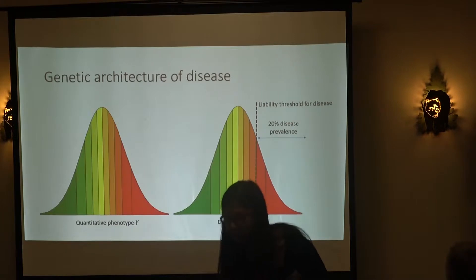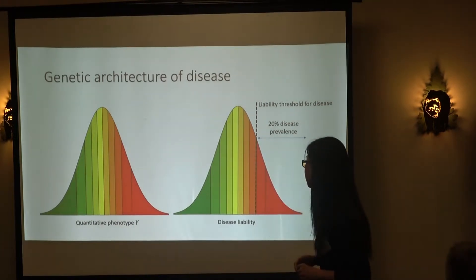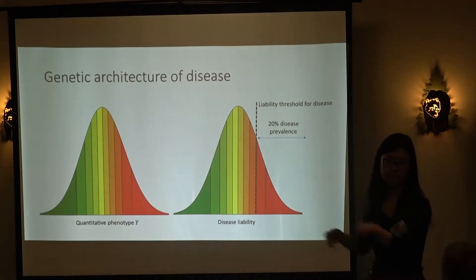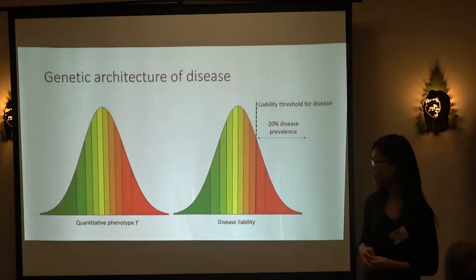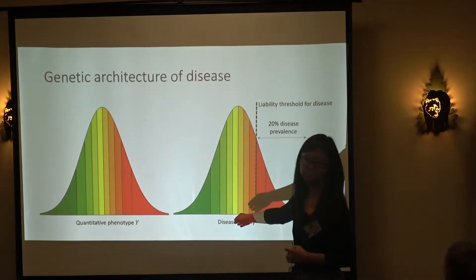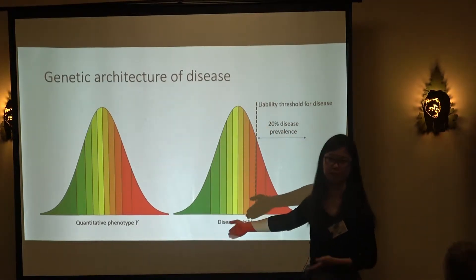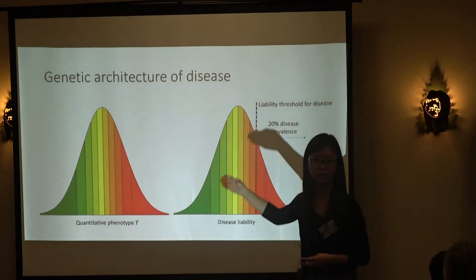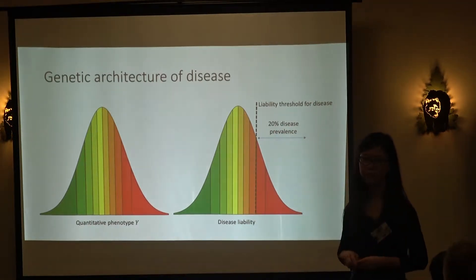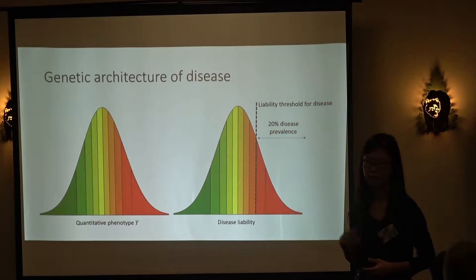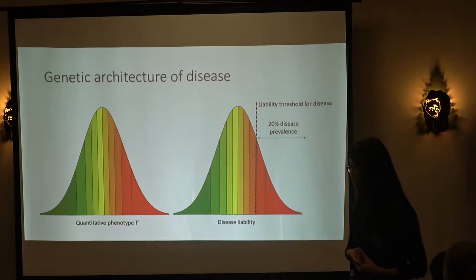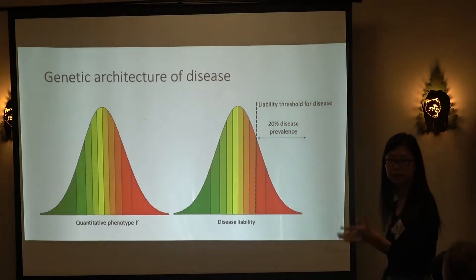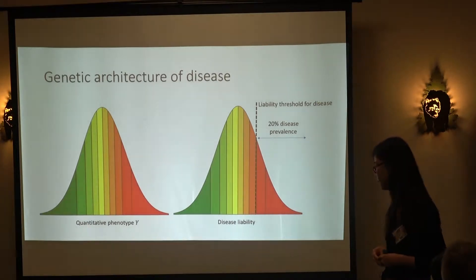In essence, for any quantitative trait y, this is how we express the genetic architecture — a normal distribution with a constant mean and a variance decomposed as described. Now, what about disease? How do we express the genetic architecture of a disease?